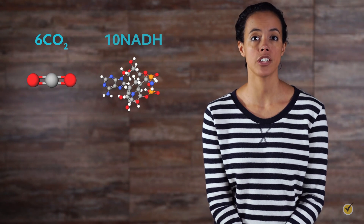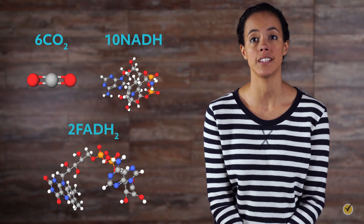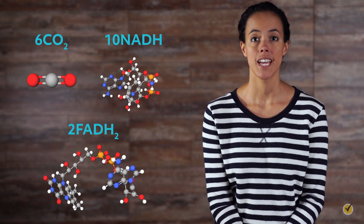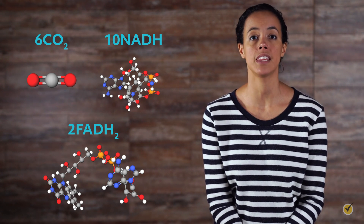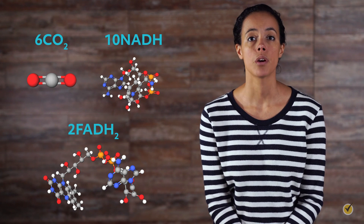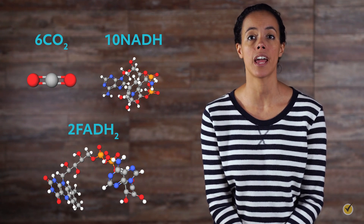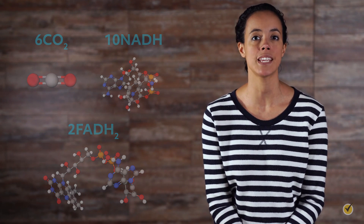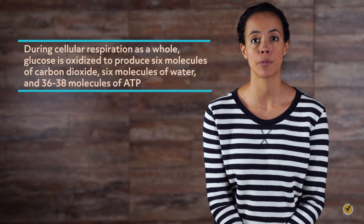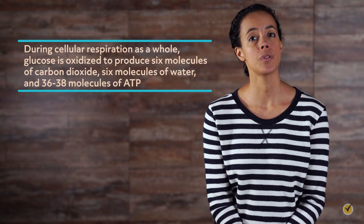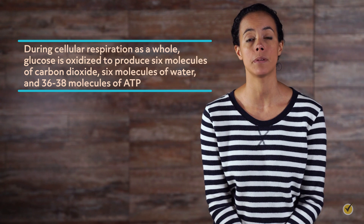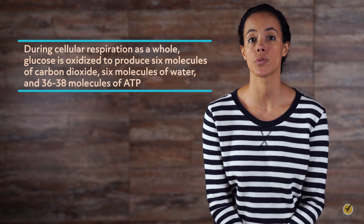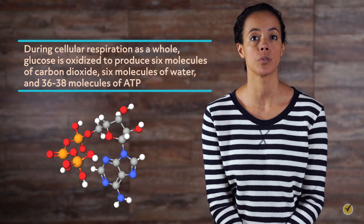Between the two processes of glycolysis and the Krebs cycle, six CO2 molecules, 10 NADH molecules, and two FADH2 molecules are produced in total. The next step involves electron transport through the electron transport chain, where oxygen is reduced by NADH and FADH2 to generate a proton motive force for the formation of ATP molecules. During cellular respiration as a whole, glucose is oxidized to produce six molecules of carbon dioxide, six molecules of water, and 36 to 38 molecules of ATP.